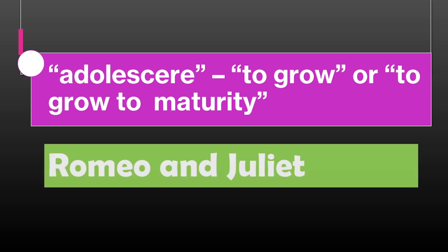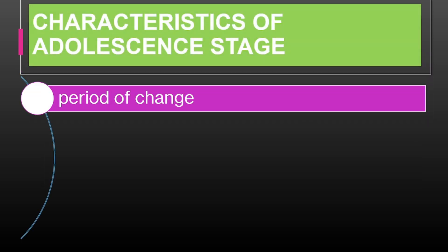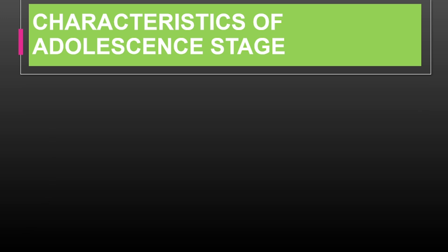To make these concepts more relatable, we'll use the story of Romeo and Juliet as an example. This classic play by William Shakespeare vividly portrays many aspects of adolescent development. Adolescence is a time of rapid growth, both physically and emotionally. In Romeo and Juliet, we see this through the characters of Romeo and Juliet, who are both teenagers navigating the tumultuous period of adolescence. Their rapid physical growth and evolving emotions reflect the developmental changes typical of this stage.